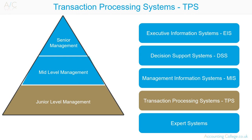For example, if an organisation makes a sale it has to be recorded, or if it makes a purchase it has to be recorded. Transaction processing systems look at the individual transactions. It's concerned with recording basic information. It is the basis for modern accounting systems, providing routine reporting which can be used by junior management.